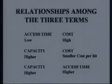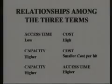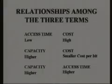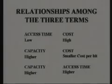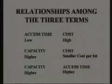Why do these trade-offs lead us to a memory hierarchy? There are a few basic facts: first, when the access time of a given memory is low, the cost tends to be high. Second, if the capacity of a given memory is higher, the cost per bit tends to be smaller. Third, whenever the capacity of the memories is on the higher side, the access time also tends to be on the higher side. These are the three basic facts which go with any memory system.